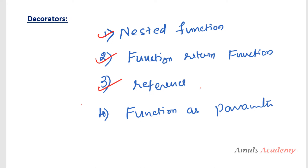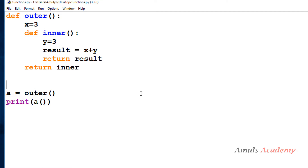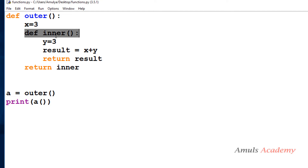The three concepts — nested function, function return function, and reference — we discussed in the previous tutorial while explaining about closure. I won't explain much about them here. This is the example from the previous tutorial: we have a function 'outer', and inside that another function 'inner'. If I define a function inside another function, that is called a nested function. Here 'inner' is defined inside 'outer', so inner is the nested function.